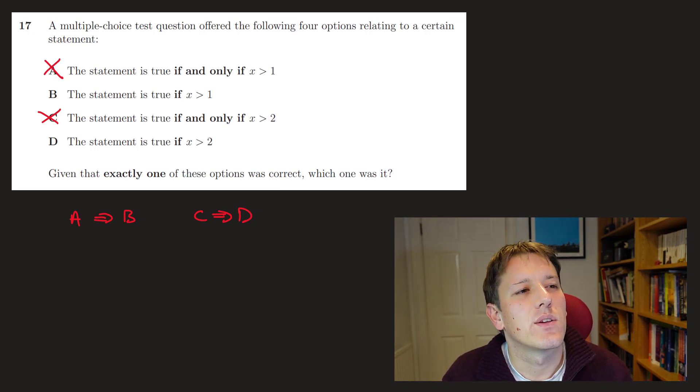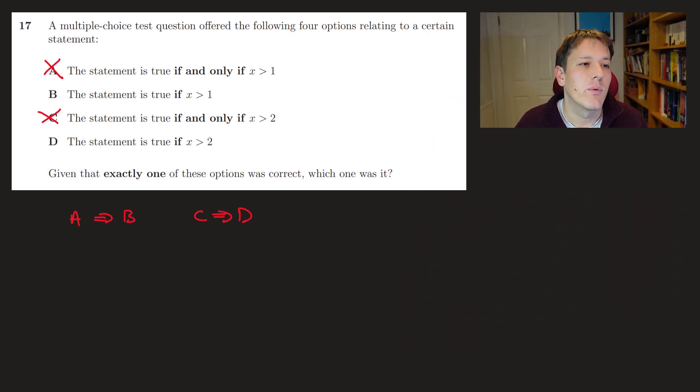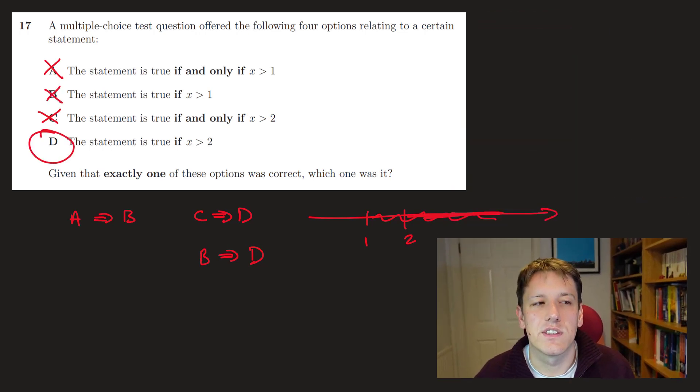Right, so let's just think carefully about b and d. And we've got the case, so if the statement is true when x is bigger than 1, well, so for all values bigger than 1, the statement is true here. So whatever that statement is, it's necessarily also true, it's already true for all values greater than 2. So it must be here that b implies d, and so again, we can't have b being true just on its own, because if b were true, d would also be true. So the answer can't be b, and the final answer is d.